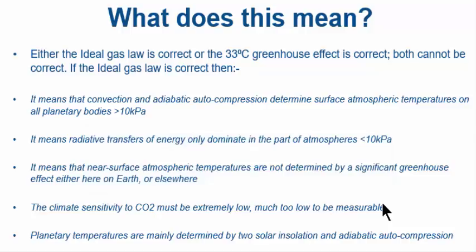You can put a bit of extra nitrogen, a bit of extra oxygen, or whatever. Doesn't make any difference. Planetary temperatures are mainly determined by two things: solar insolation and adiabatic auto-compression. Period.